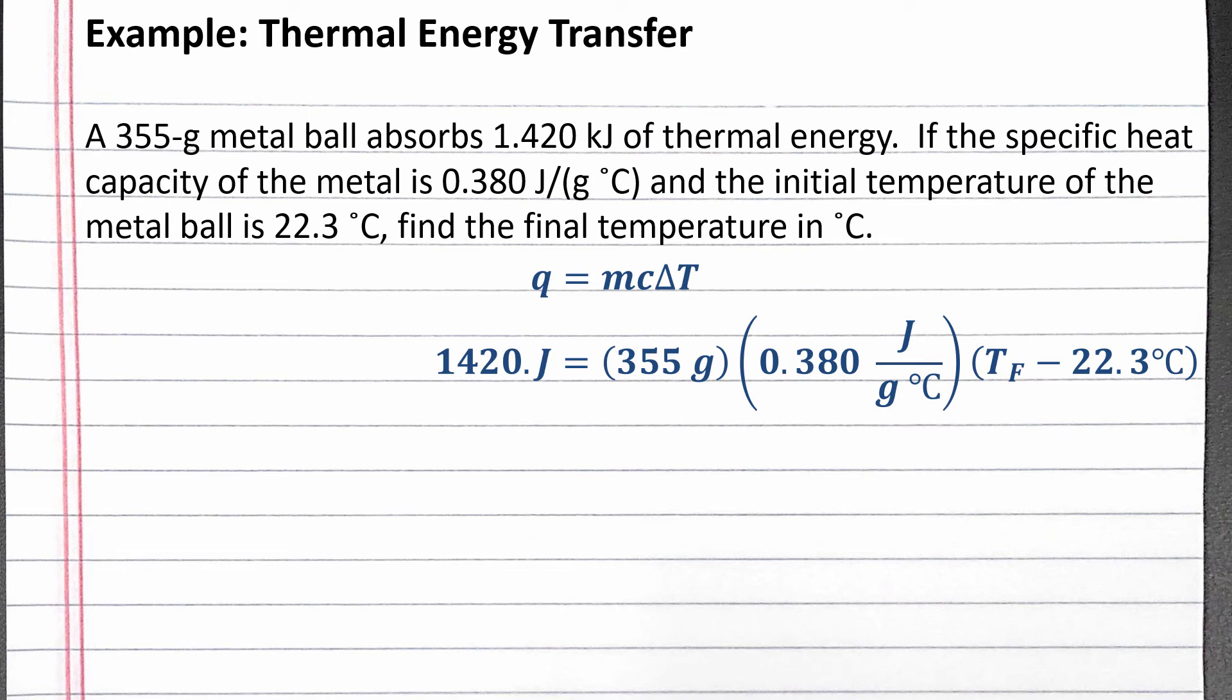First we can divide both sides by 355 grams and 0.380 joules per gram degrees Celsius. This will isolate final temperature minus 22.3 degrees on the right side of the equation, which was in parentheses.